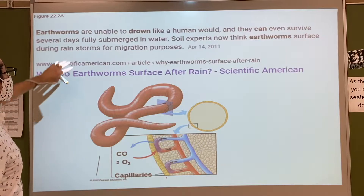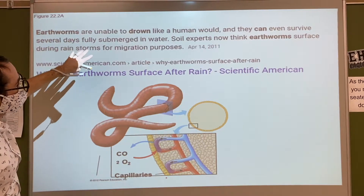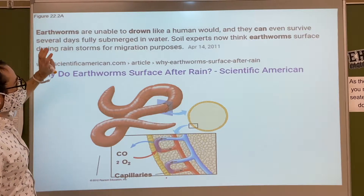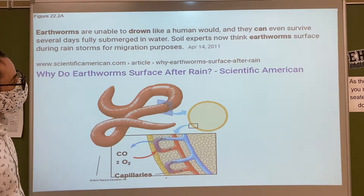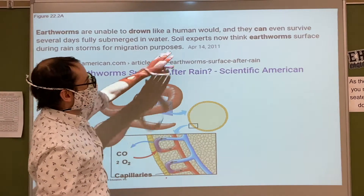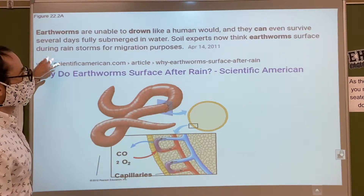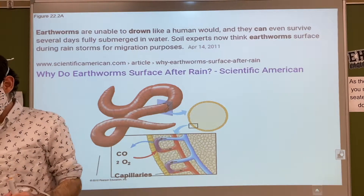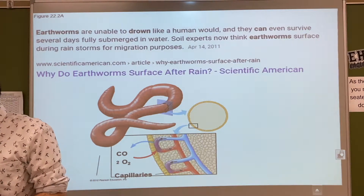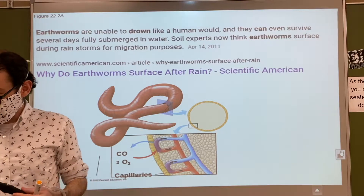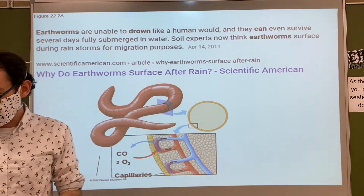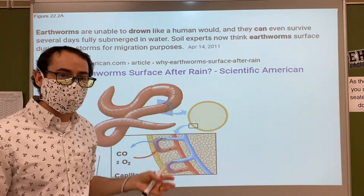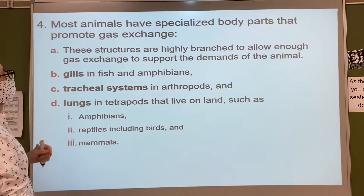Some other fun facts about earthworms: earthworms are unable to drown like a human would — they can even survive several days fully underwater. And soil experts think that earthworms surface during rainstorms for migration. So earthworms actually migrate — how fascinating is that? You never think about earthworm migration, but that's what they're doing.